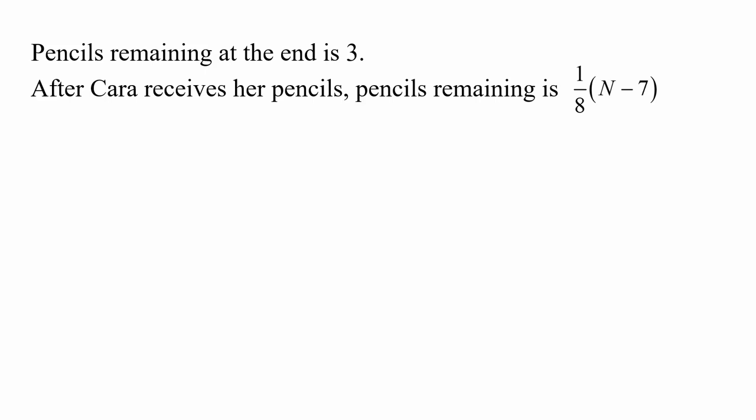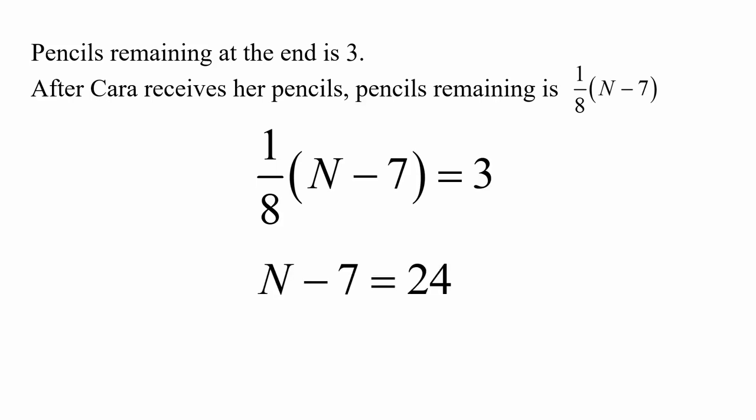Now remember, we know that at the end of the process there are three pencils remaining. And we have just worked out that the expression for the number of pencils remaining at the end is one over eight bracket N minus seven. So that means we can form an equation. Can you solve that equation to work out the value of N? We can multiply both sides by eight, and that gives us N minus seven equals 24. Then adding seven to both sides, we have N equals 31. So if we start with 31 pencils and follow the rules, there will be three pencils remaining, and none of the rules have been broken.